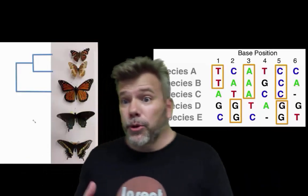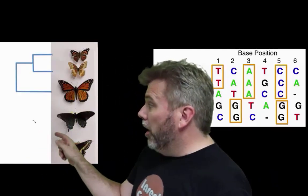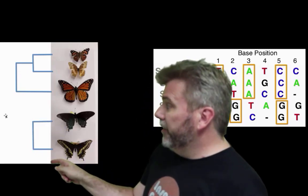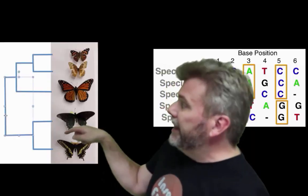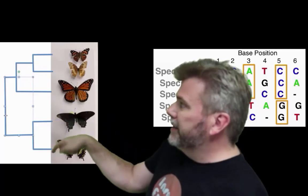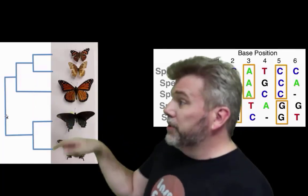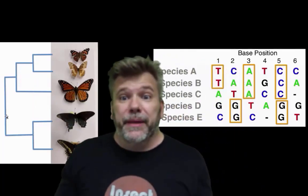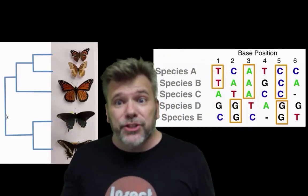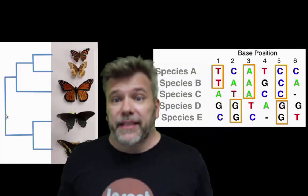They're grouped together. So, if we draw it, D and E together, and then we connect both the groups. And that would be our phylogeny utilizing these data.